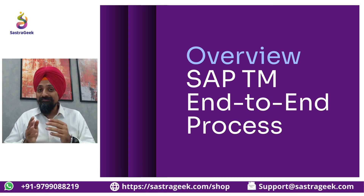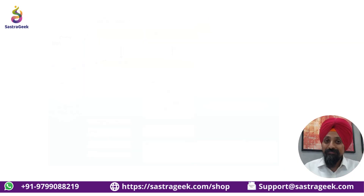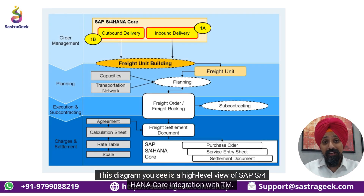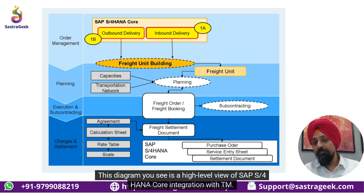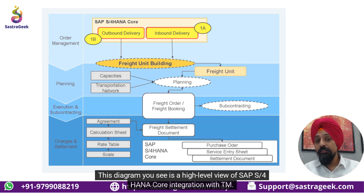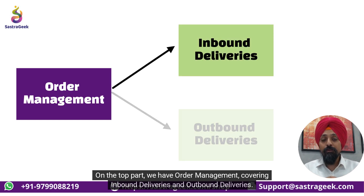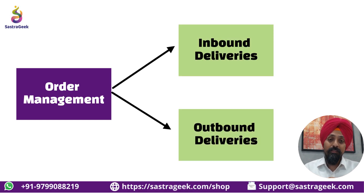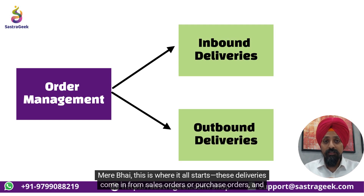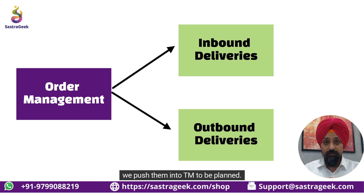This diagram you see is a high-level view of SAP S/4HANA core integration with TM. On the top part we have order management covering inbound deliveries and outbound deliveries — this is where it all starts. These deliveries come in from sales orders or purchase orders and we push them into TM to be planned.